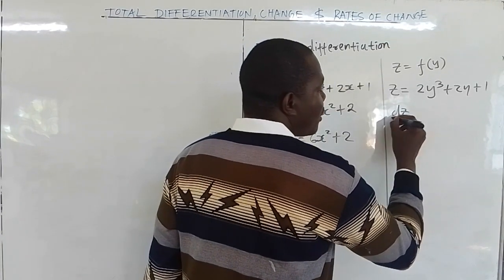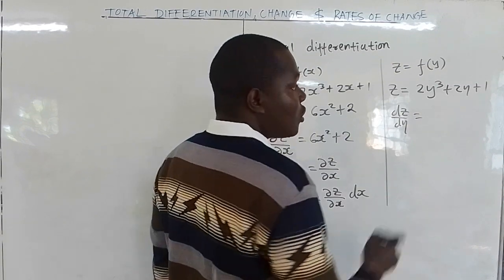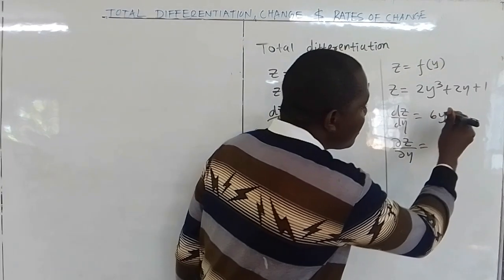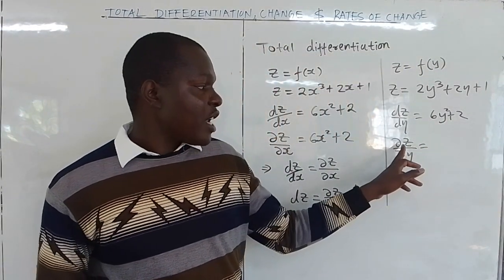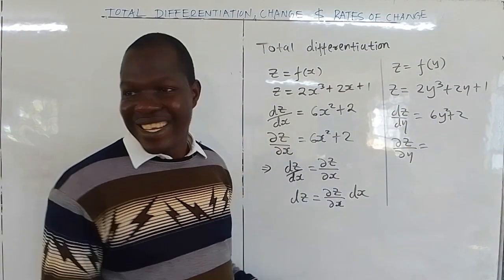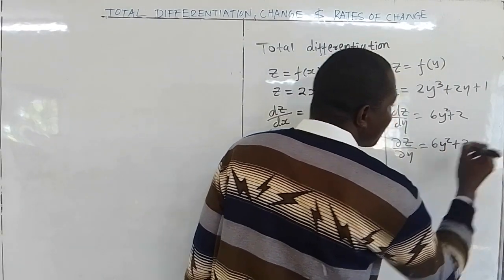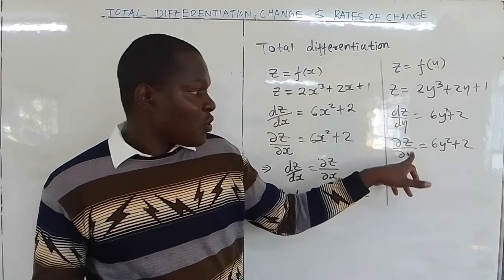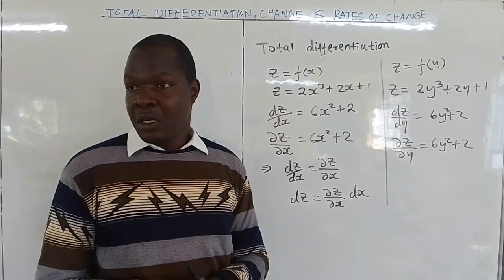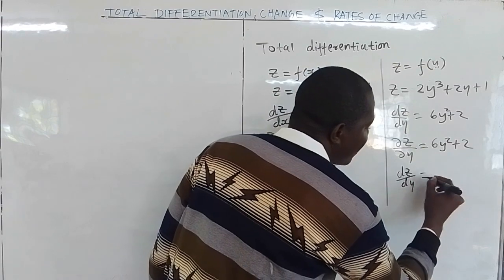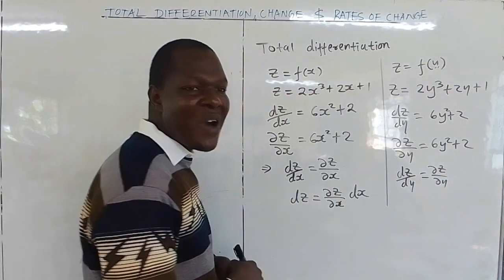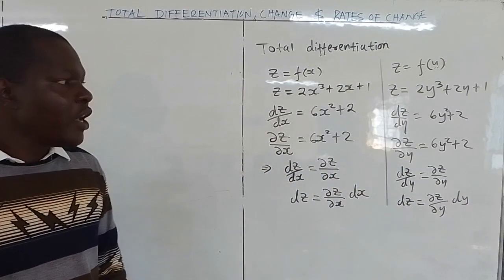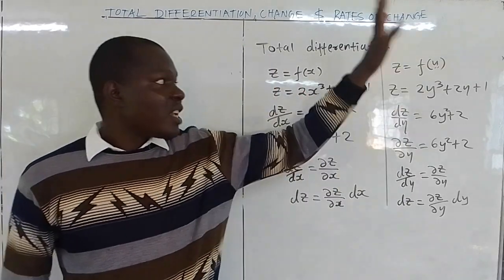If you differentiate z with respect to y — that is an ordinary derivative — you get 6y squared plus 2. If you differentiate z partially with respect to y, only y is a variable, and you again get 6y squared plus 2. So dz/dy is the same as ∂z/∂y because z is a function of y only. Making dz the subject gives dz = (∂z/∂y)dy.